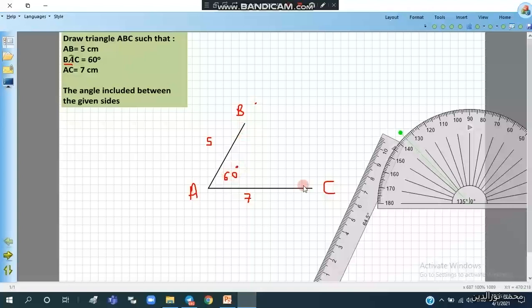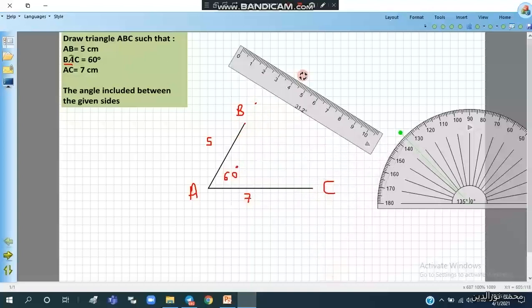Now we will connect vertex B to vertex C using the ruler.